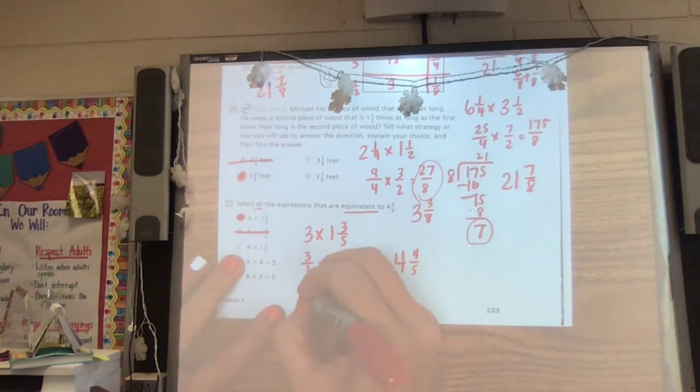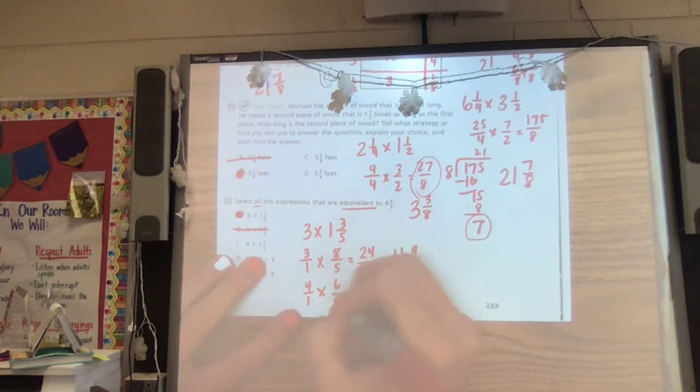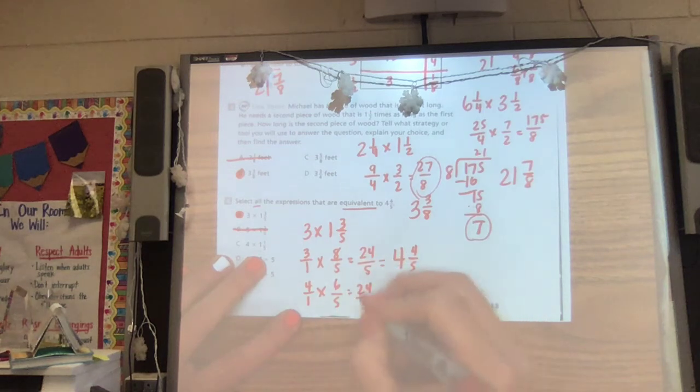Let's try this one. Four over one. Let's go ahead and change this. Five times one is five plus one is six fifths. Oh look, I get 24 fifths again, so I know that works.